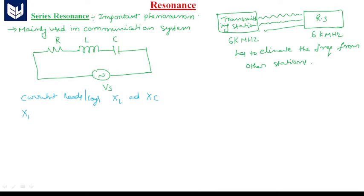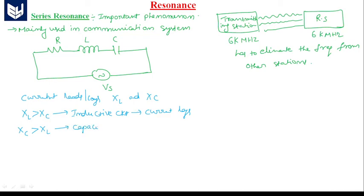Whenever XL is greater than XC, the circuit is an inductive circuit, and in that case the current will lag. Whenever XC is greater than XL, then the circuit is a capacitive circuit. So whether the current is lagging or leading depends on the inductive reactance and capacitive reactance of the circuit.